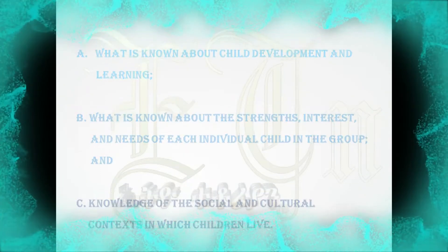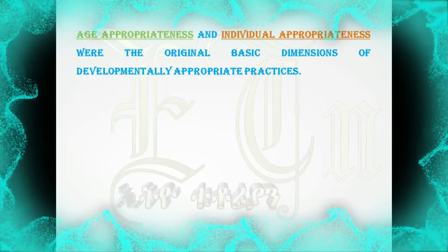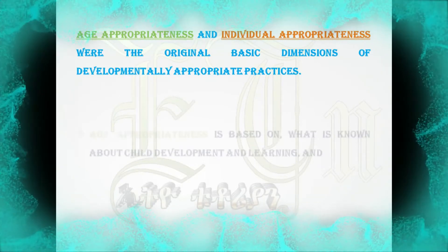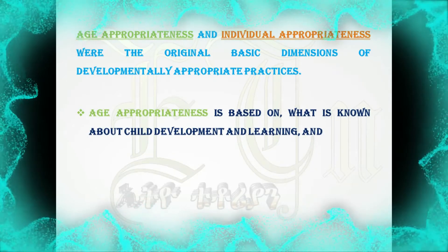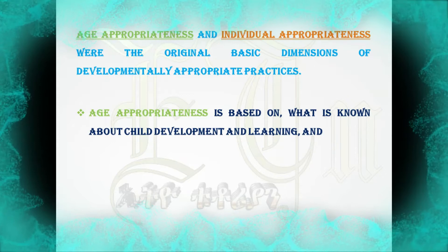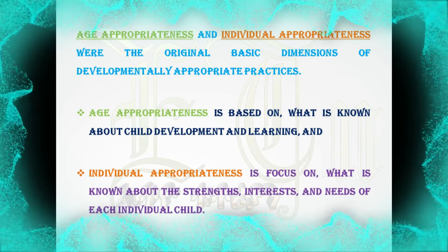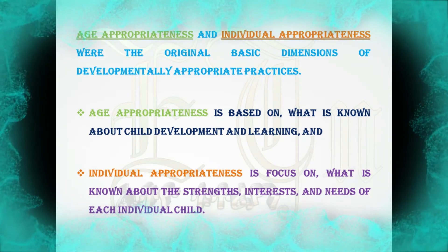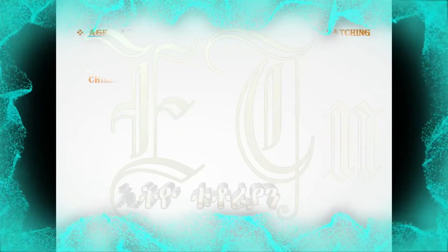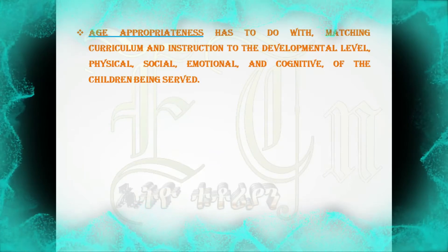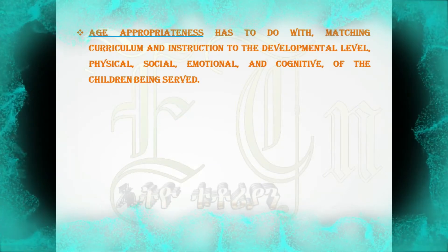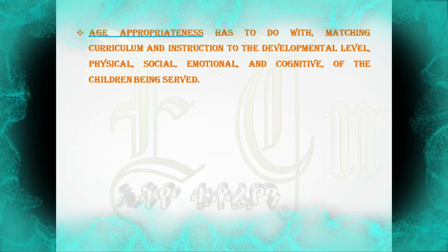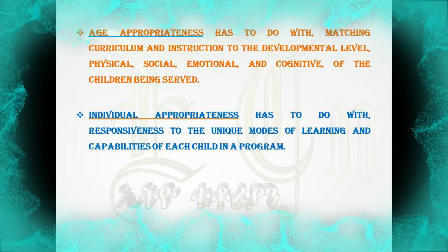Age appropriateness and individual appropriateness were the original basic dimensions of developmentally appropriate practice. Age appropriateness is based on what is known about child development and learning, and individual appropriateness is focused on what is known about the strengths, interests, and needs of each individual child. Age appropriateness has to do with matching curriculum and instruction to the developmental level — physical, social, emotional, and cognitive — of the children being served.